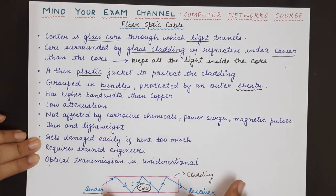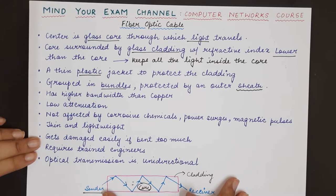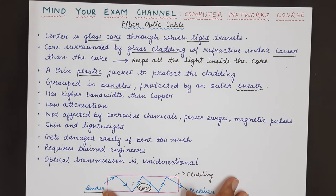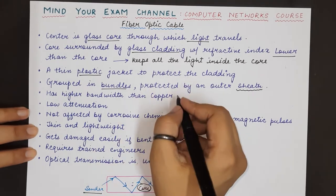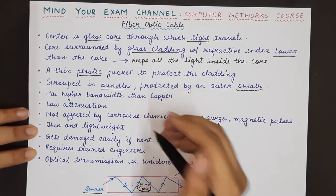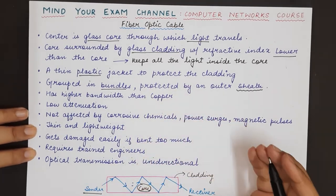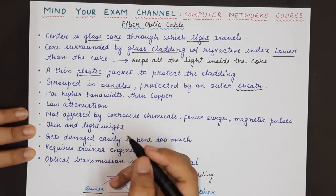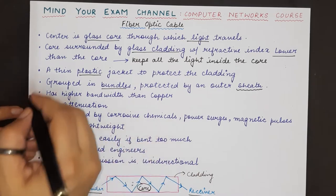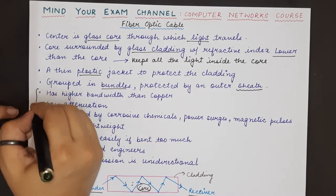Now let us see how fiber optic cables actually compare with respect to a copper cable or other transmission types. Let us understand what are its advantages and disadvantages.